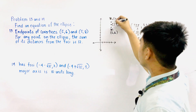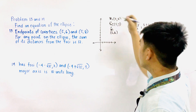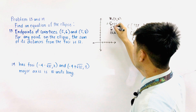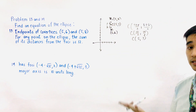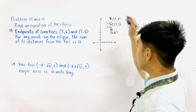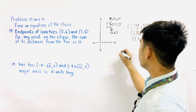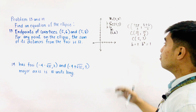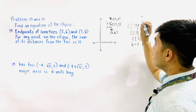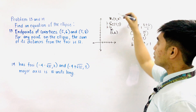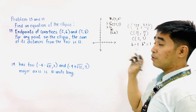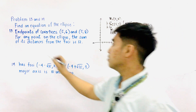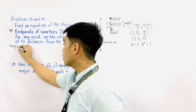Based on the graph, from the center up to one endpoint of the co-vertices, that distance is B. From the center going to another endpoint, that is also B. It is very evident that the value of B is just one unit. Therefore, B equals 1, and B squared equals 1. Based on the graph, the endpoints of the co-vertices lie on the vertical line, so this is the minor axis, and the major axis is horizontal. We have a major horizontal axis.